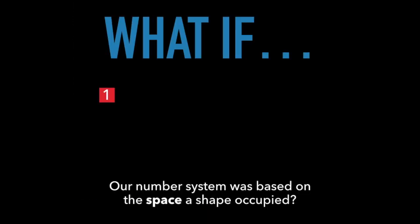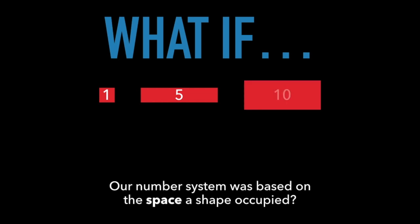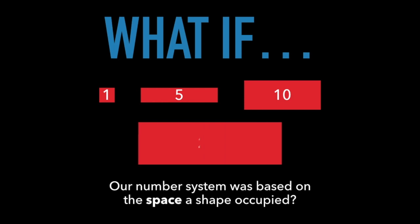What if, instead of using numbers, our number system was based on how much space a shape occupied? This could be 1, and this 5, and this 10. But what about this — 27? Hmm, this system could be a problem. It's hard to know if this was 27, or 25, or maybe 29. We may need to use more predictable numbers in our system.